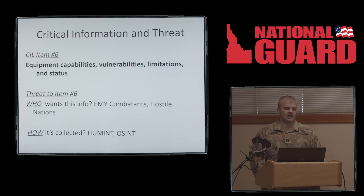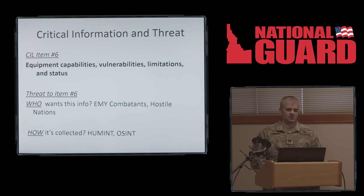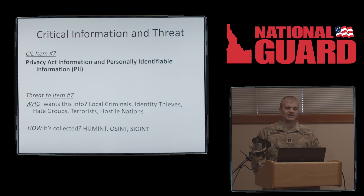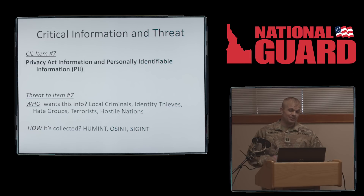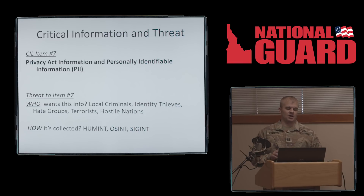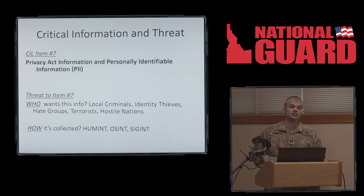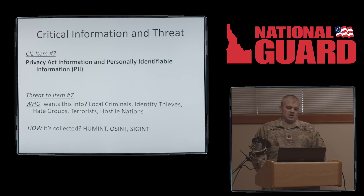Item number six is equipment capabilities, vulnerabilities, limitations, and status. The individuals wanting this information are enemy combatants and hostile nations, and it will be collected by HUMINT and OSINT. Item number seven is privacy act information and personally identifiable information, or PII. This covers a lot more threat levels, which is why you always hear about safeguarding PII. Local criminals, identity thieves, hate groups, terrorists, and hostile nations all want your information because they can exploit you very easily with it. The main collection methods are HUMINT, OSINT, and SIGINT.